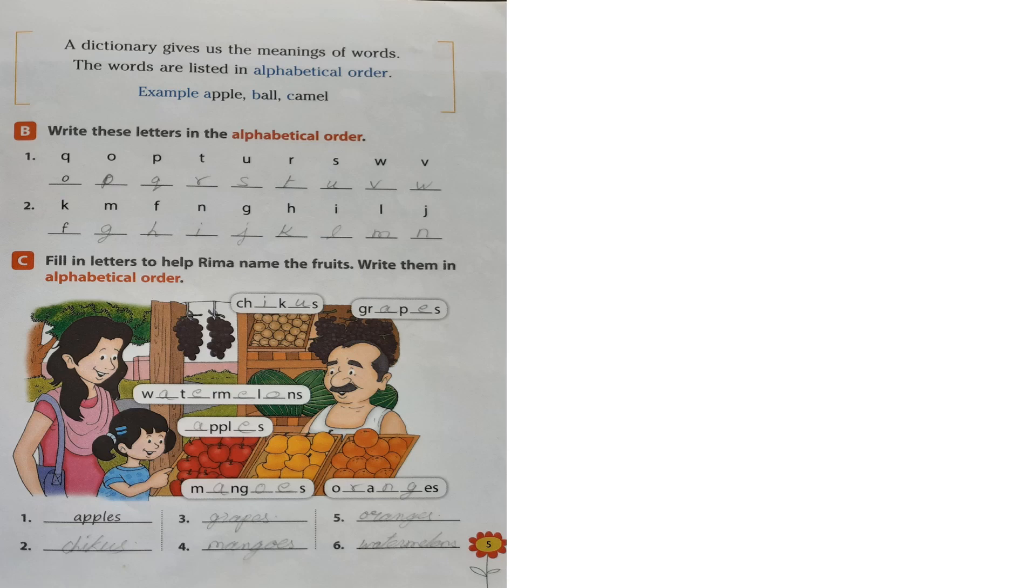The next one. G, R, A, P, E, S. Grapes. W, A, T, E, R, M, E, L, O, N, S. Watermelons. A, P, P, L, E, S. M, A, N, G, O, E, S. O, R, A, N, G, E, S. Did you write it out? Very good.